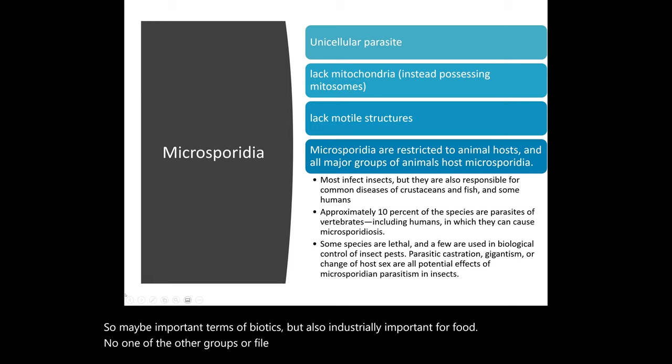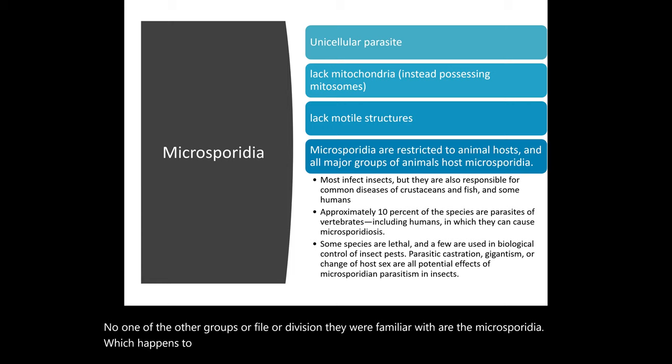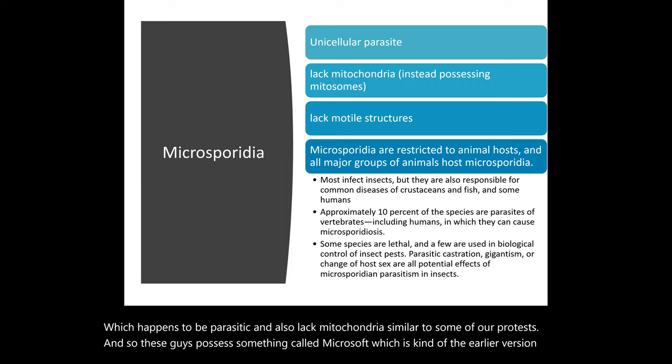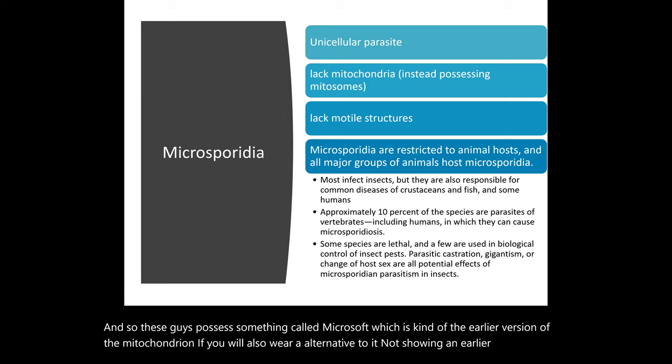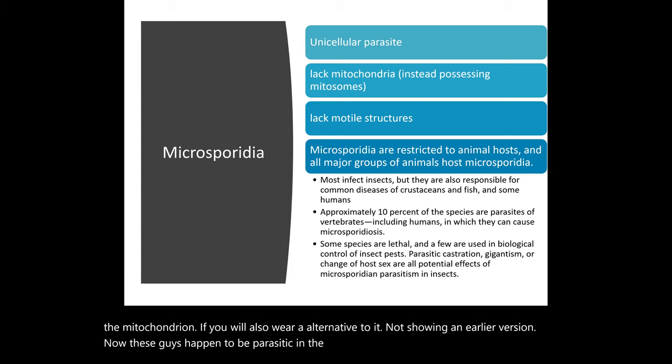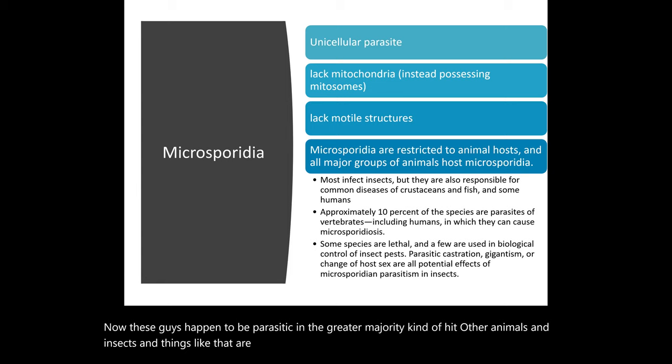Another fungal division is Microsporidia, which are parasitic and notably lack mitochondria — similar to some protists. Instead, they possess a structure called a mitosome, which is an alternative to mitochondria. Microsporidia are largely parasitic and primarily affect other animals and certain insects, though a small number of species do infect humans.